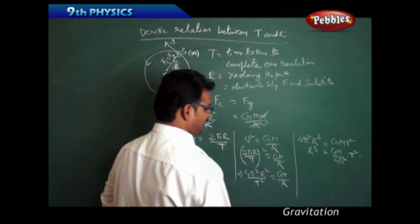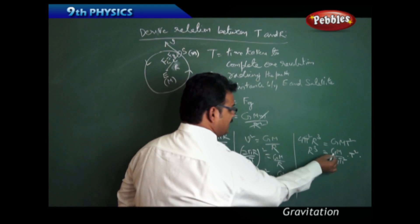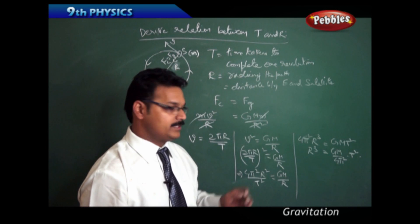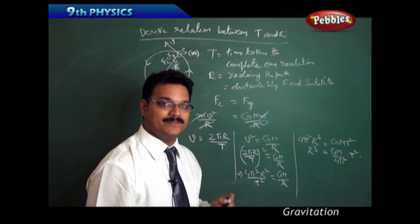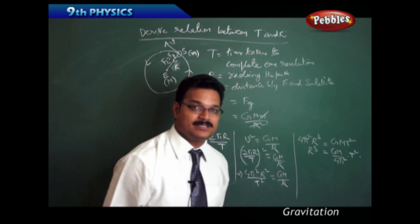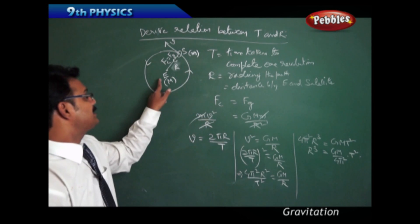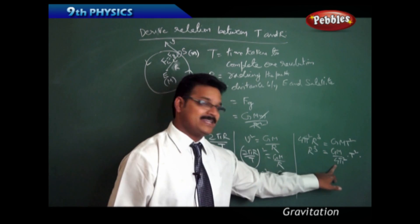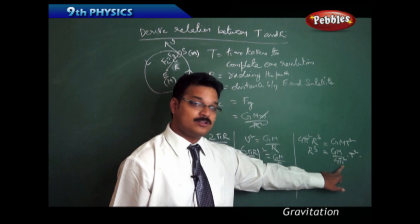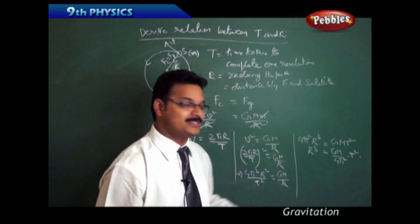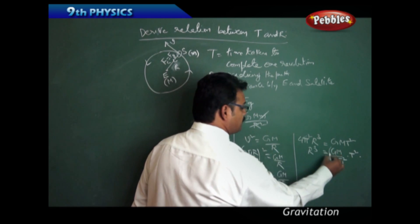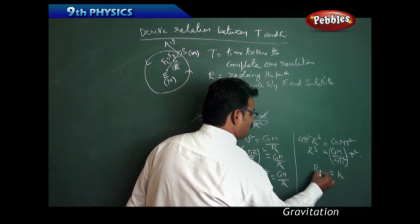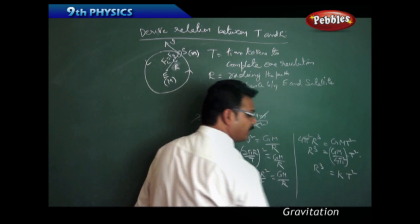If you observe this expression carefully: G is the gravitational constant, 6.67×10⁻¹¹; M is the mass of the Earth, always constant; 4 is a number; and π² is a constant. So the whole expression is a constant, represented by k. Therefore R³ = k·T².